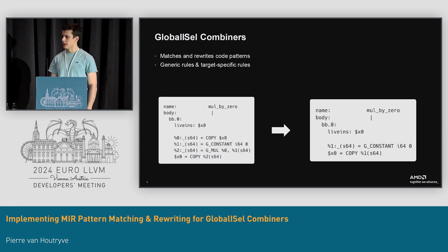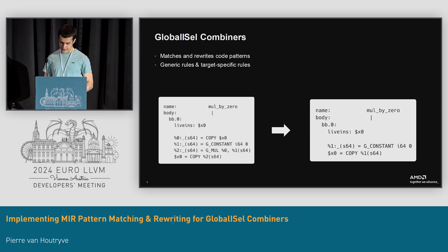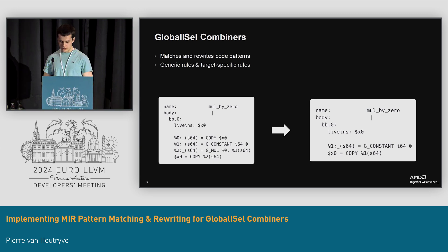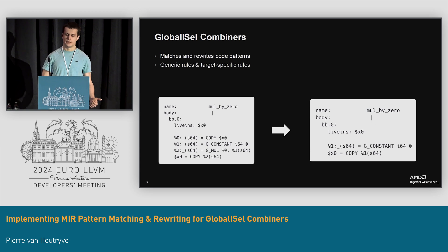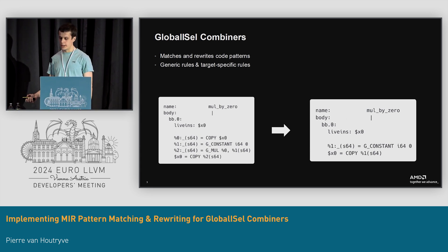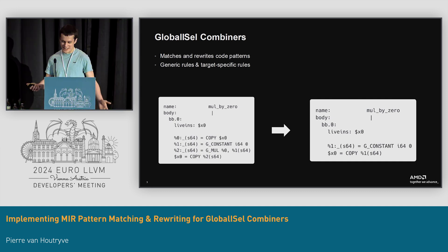Global ICEL also needs to combine code like the DAG does. Combines are small peephole optimizations where you match a pattern of code and replace it with something that's either more efficient in any case — that would be a generic transform — or something that's more efficient for the specific target you're dealing with, something that's faster but only on that architecture. An example of a common generic combine is replacing mul by zero with zero. That's faster on any target.